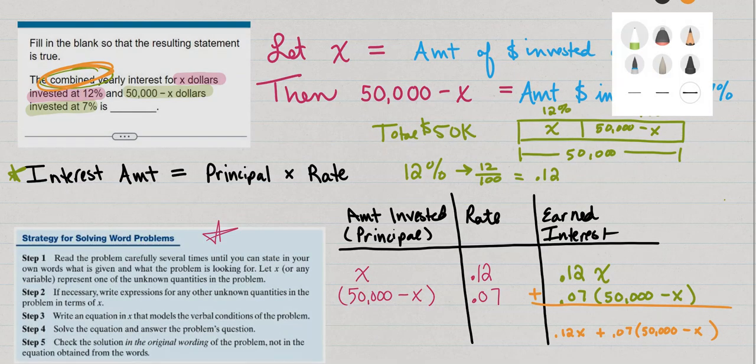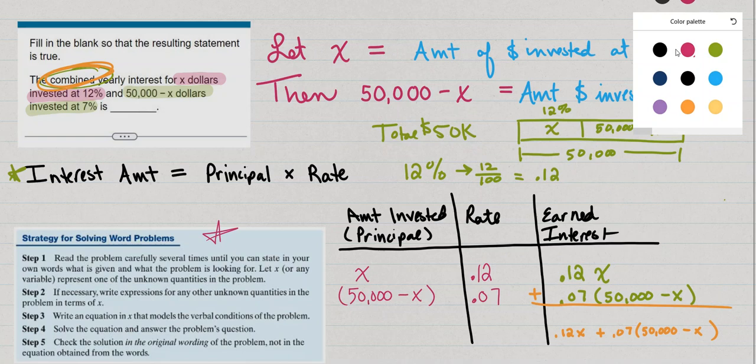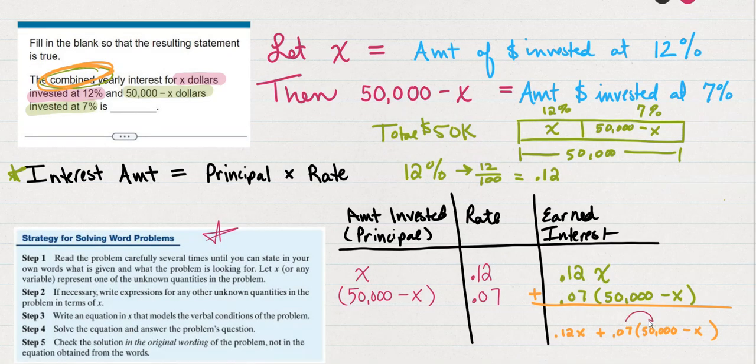And of course, if we were going to solve this further, then what we would want to do is distribute the seven hundredths. So we'd do seven hundredths times 50,000 and then seven hundredths times the opposite of X. But this part right here, this orange part, is the final answer to this question.